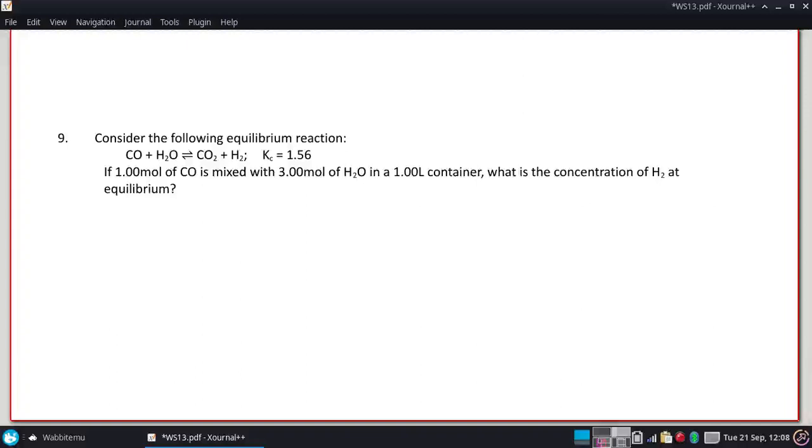Alright, considering the following: carbon monoxide and water gives carbon dioxide and hydrogen with a K of 1.56. If one mole of carbon monoxide is mixed with three moles of water in a one liter container, what is the concentration of H2 at equilibrium?